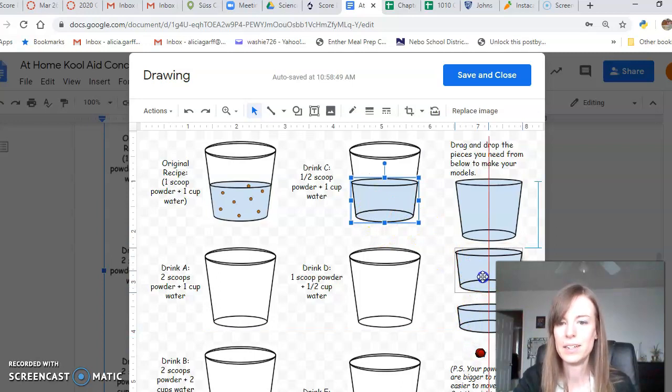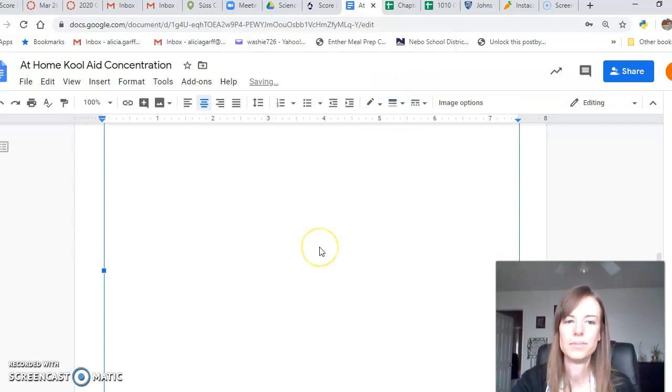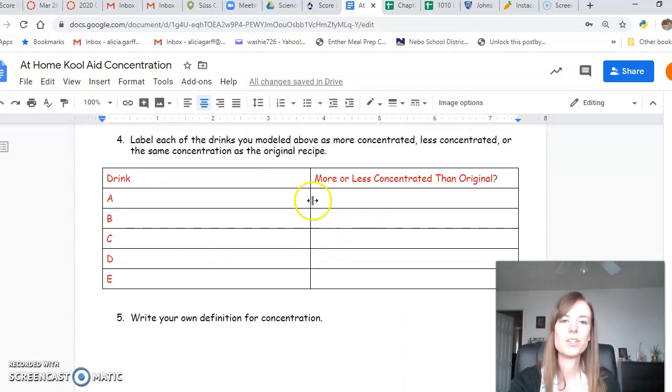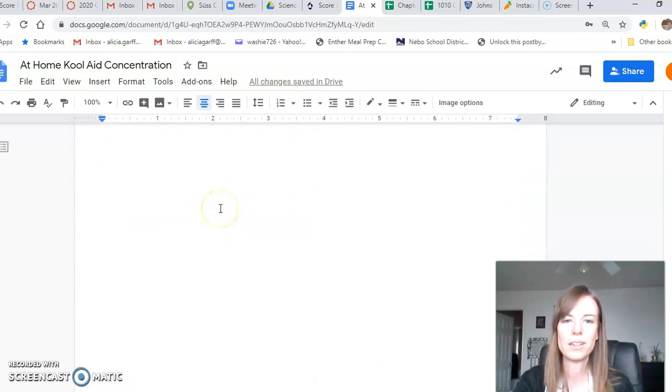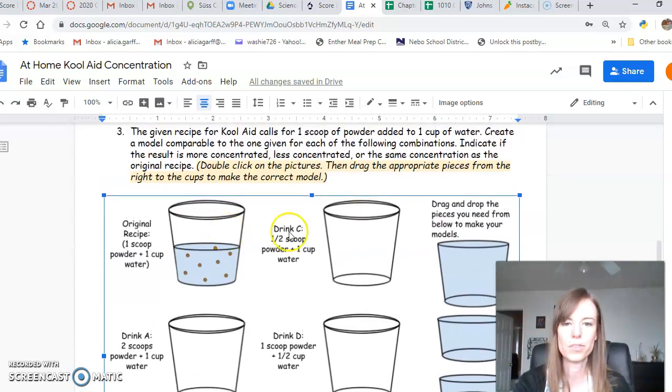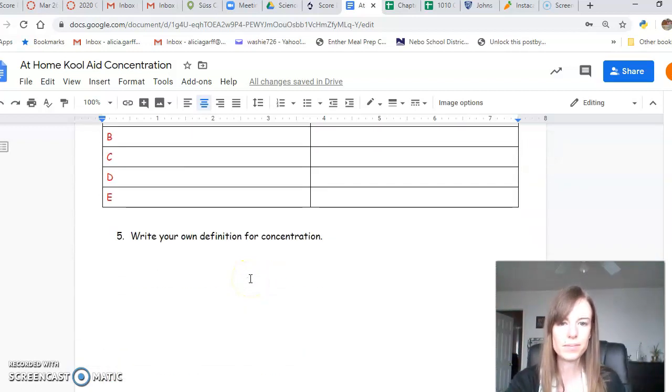When you're done making your little drink models, just hit the save and close button up here and then it will save all the work that you've done. Then you just need to say whether they're more or less concentrated than the original. For example, drink C is going to be less concentrated because it only has four dots in one cup of water instead of eight. And then just write a definition for concentration, what you think it is.